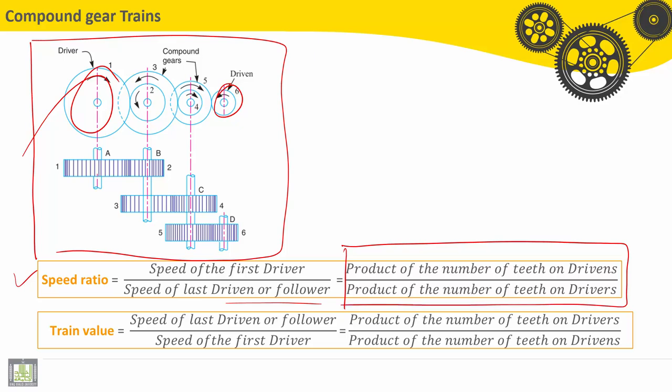...divided by the product of the number of teeth on the drivers. Train value is the opposite of the speed ratio.